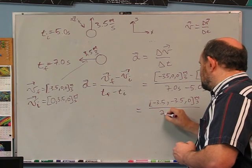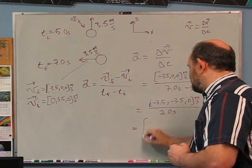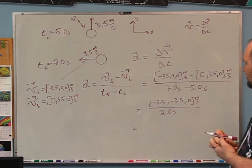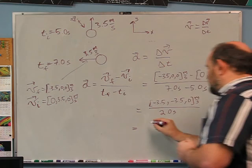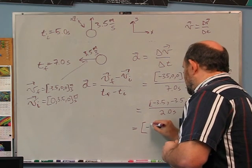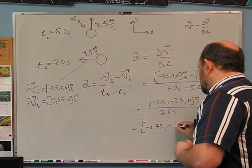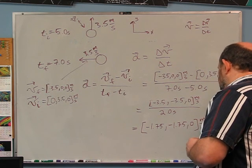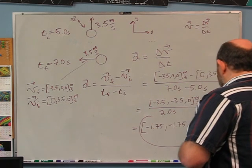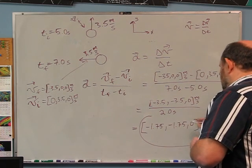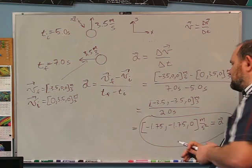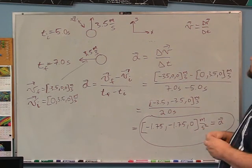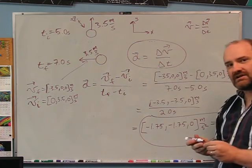All divided by 2.0 seconds. Dividing 3.5 by 2 gives 1.75. So the average acceleration is (-1.75, -1.75, 0) meters per second squared. That is the average acceleration of the hockey puck between 5 and 7 seconds — a simple example of using this equation with a full vector.